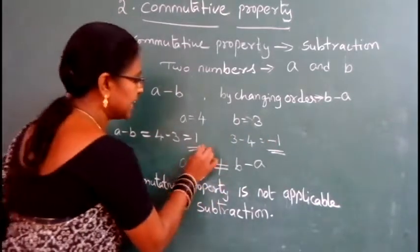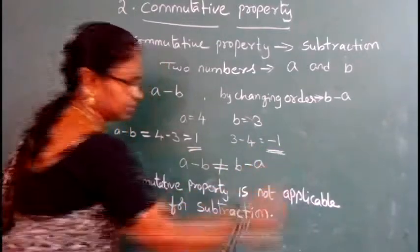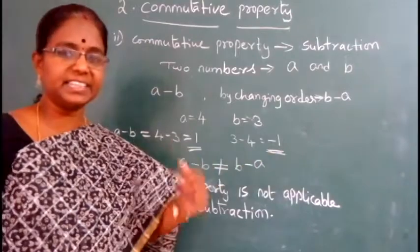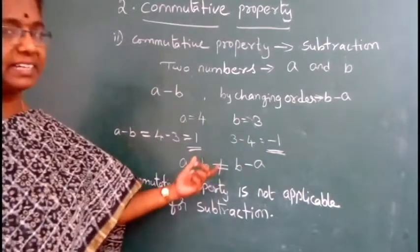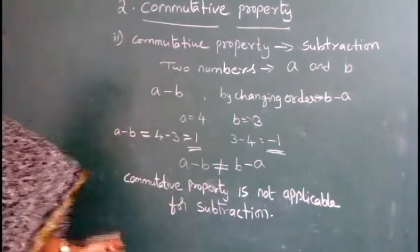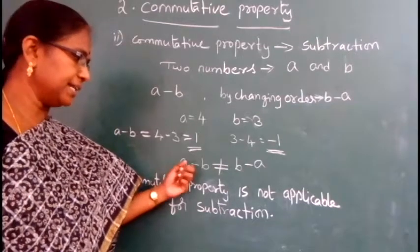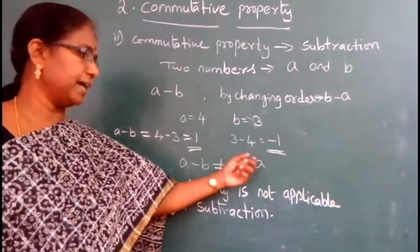The results are 1 and minus 1. 1 is natural number, 1 is integer. But both the results are not equal. So symbolically, what we can say? A minus b not equal to b minus a.